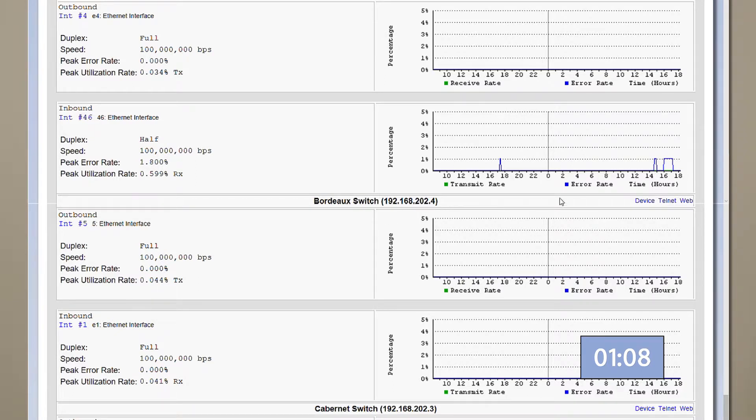The Bordeaux switch looks like it had another 1% packet loss at the exact same time. That interface is running half-duplex, so it's a quick and easy fix to implement.